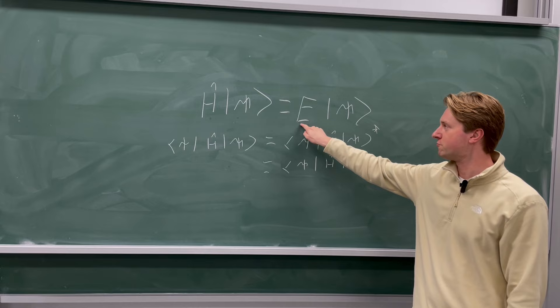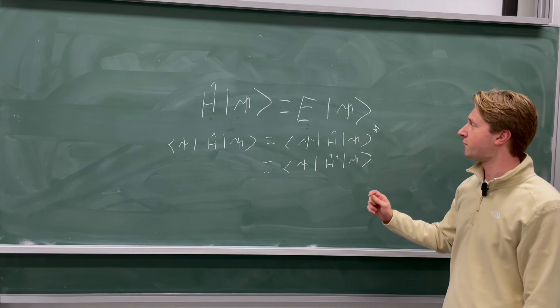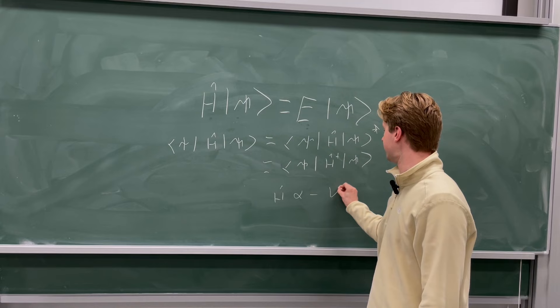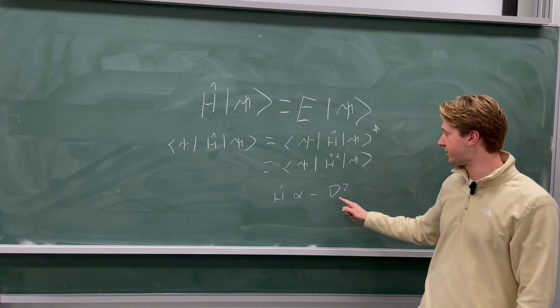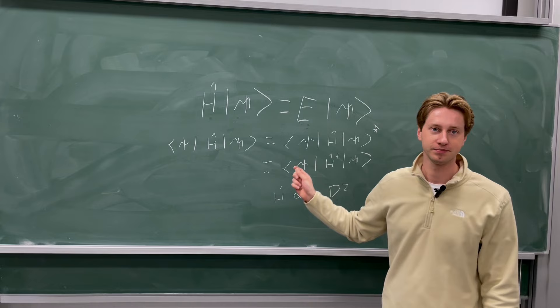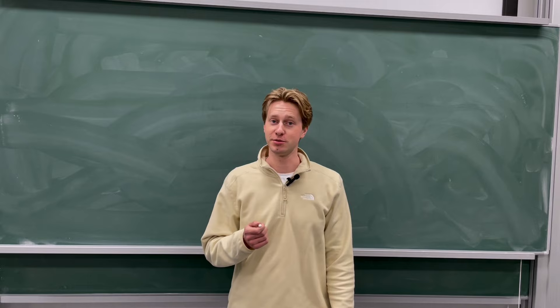For a free particle, the Hamiltonian is simply proportional to minus the Laplacian. So we must find boundary conditions that make the Laplacian self-adjoint on the domain we are studying in our quantum wires. In mathematics, operators are characterized by their behavior on some domain in the Hilbert space.